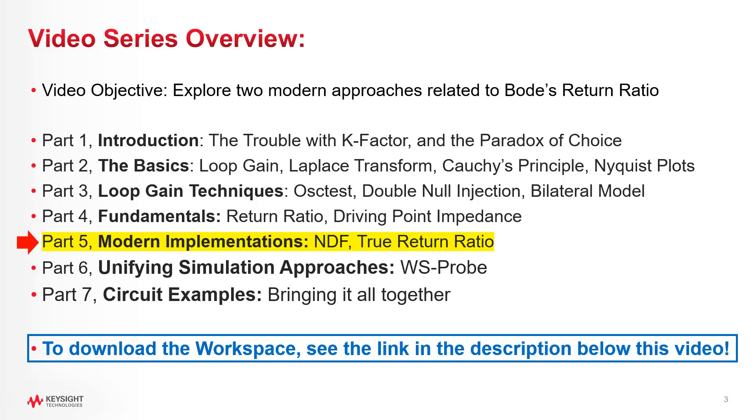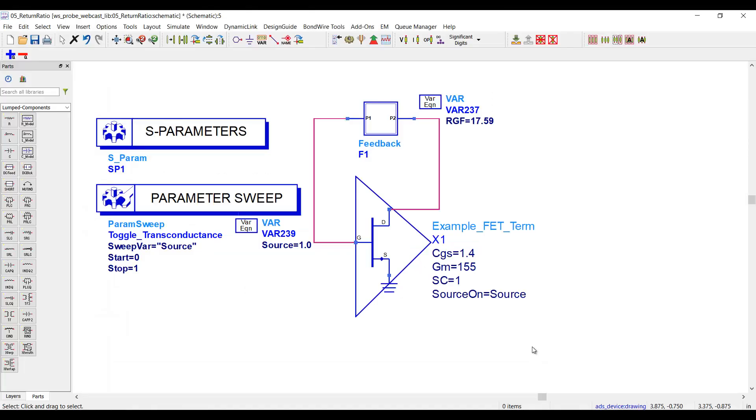First, I'll show how the normalized determinant function can extend return difference and return ratio to multiple sources, and then I'll talk about a derivation called true return ratio, which is an attempt to unify Bode's technique with a loop gain style methodology. If you want to follow along, I'm providing the workspace that has all of the example circuits I'm showing and you can see for yourself how to apply the techniques. The link is in the description below this video. Alright, let's get started.